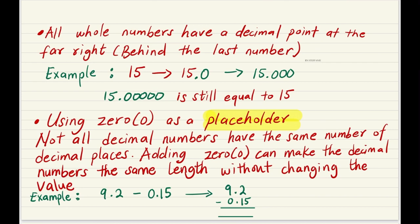First, I need all of us to understand that all whole numbers have a decimal point at the far right, behind the last number. For example, when we have 15, 15 is a whole number. 15 is the same as 15.0, is the same as 15.000. In fact, even if it's 15.00000 and so on, it's still equal to 15. Just remember that a decimal point is behind the last number, in this case being 5.